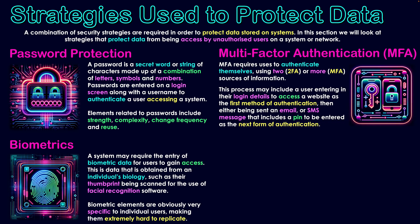The third category is multi-factor authentication, or MFA. MFA requires users to authenticate themselves using either two methods — two-factor authentication or 2FA — or more sources of information. This process may include users entering their login details as the first method, then being sent an email or SMS message containing a PIN as the next form of authentication. They read that PIN and enter it on the next screen, having gone through two processes and provided two forms of identification from different data sources to authenticate who they are.